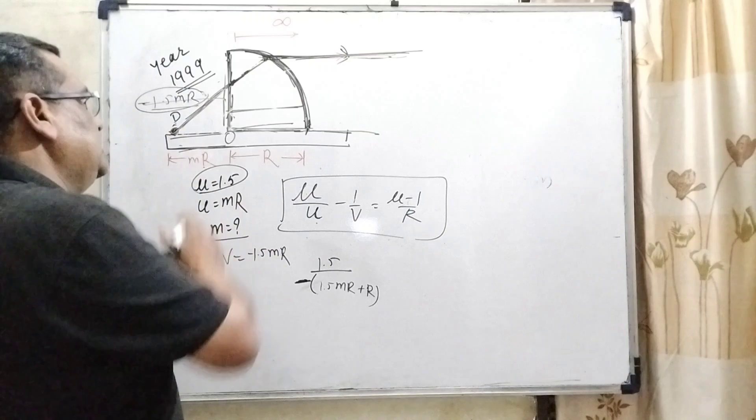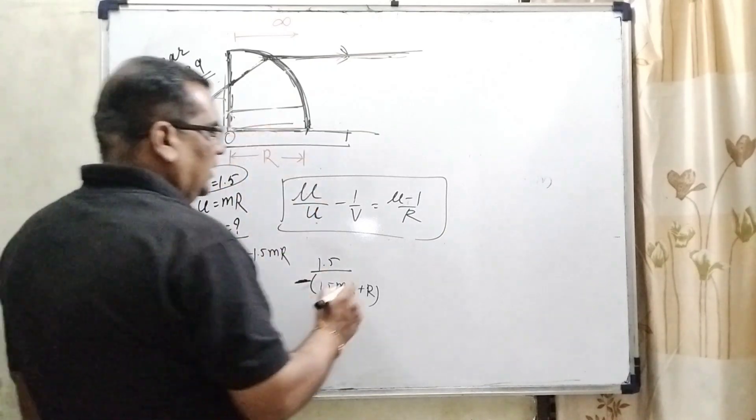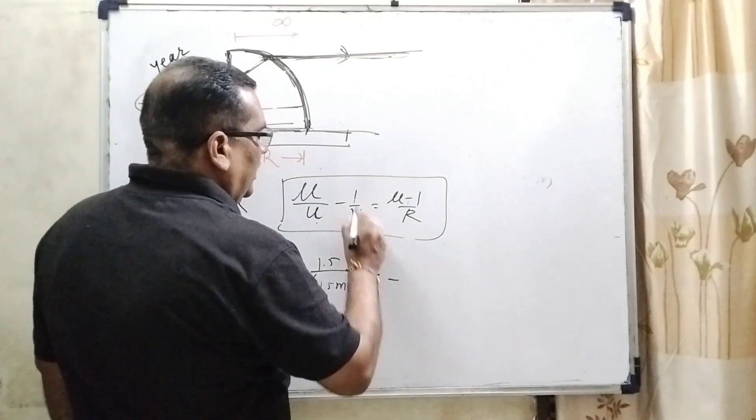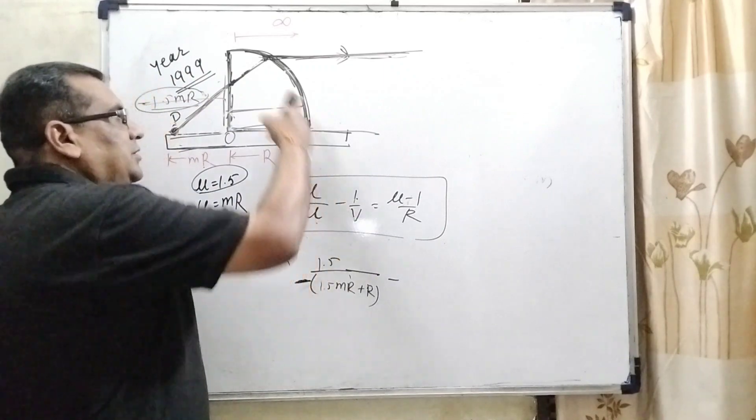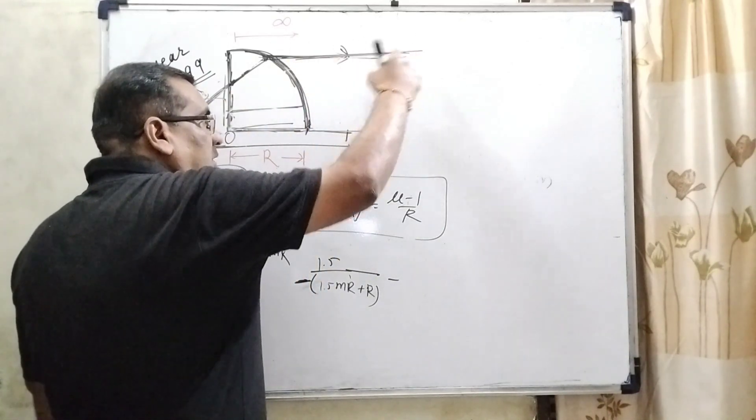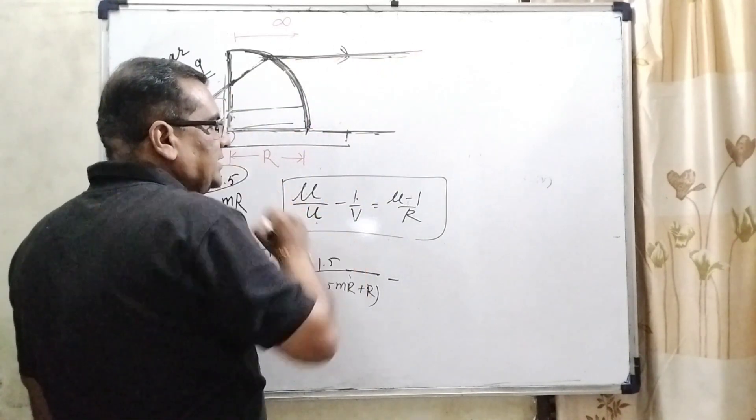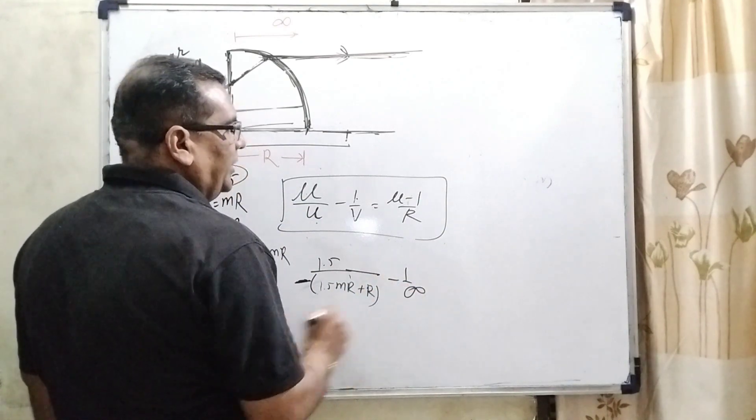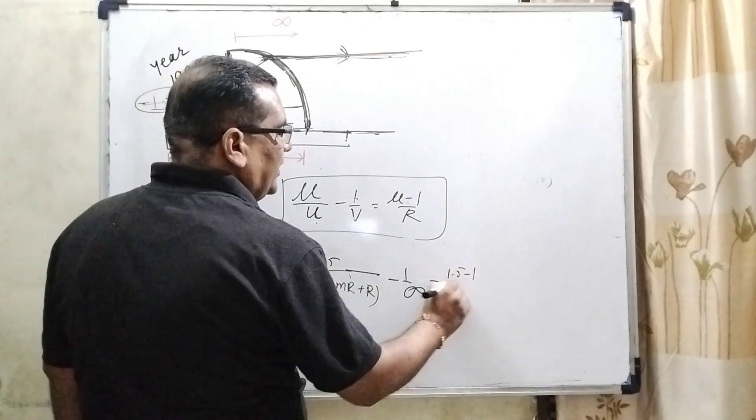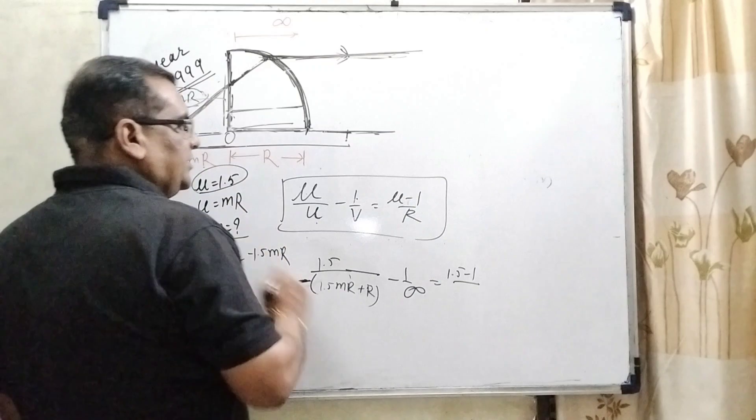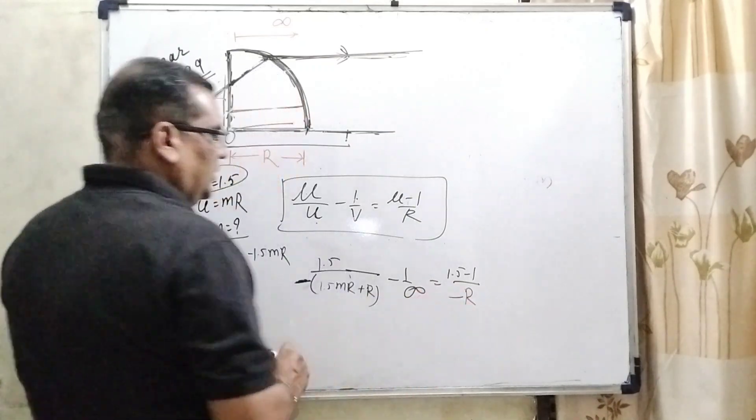Why we have taken minus? Because this ray is coming from the left side. And here position of image, that is ray goes towards parallel to the principal axis. It means image is formed at infinity. Here 1.5 minus 1 and r radius of curvature that is negative.